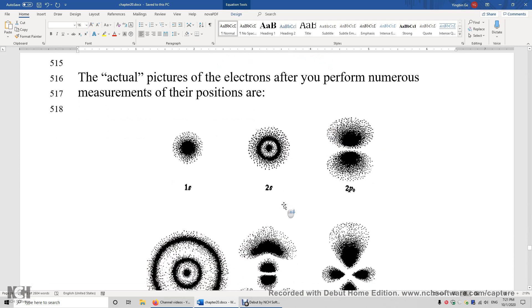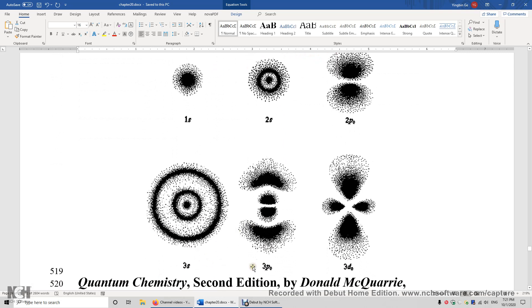Now let's look at the pictures of 3s, 3pz, and 3dz squared. So this is the 3s atomic orbital, or you can say this is the superposition of the negatives of 1,000 photos of 1,000 hydrogen atoms. In each hydrogen atom, you have a 3s electron. Now, there are two spherical nodal surfaces in this atomic orbital.